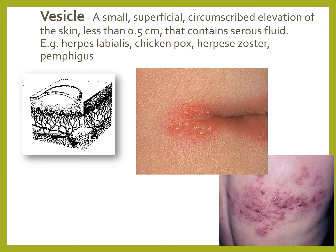A vesicle is a small superficial circumscribed elevation of the skin less than 0.5 cm in size that contains serous fluid. Examples include chickenpox, herpes zoster, or pemphigus. Images shown include herpes labialis at the angle of the mouth and a herpes zoster lesion on the skin.